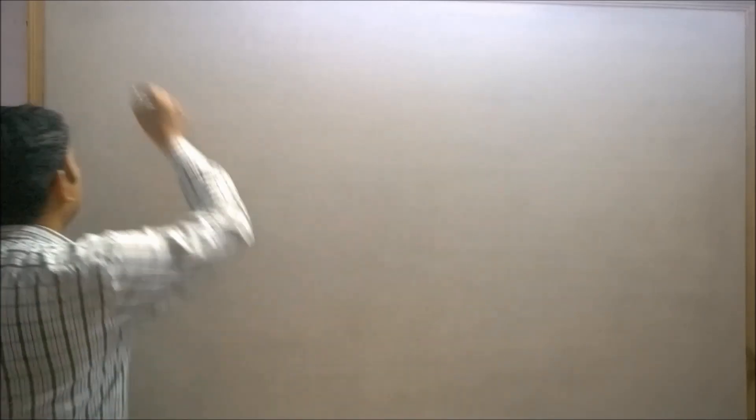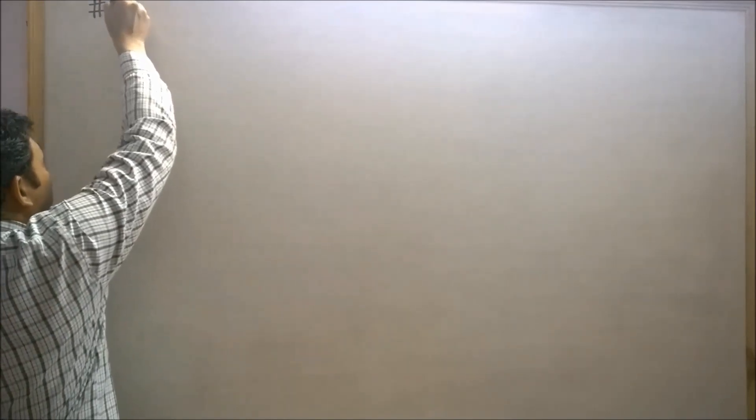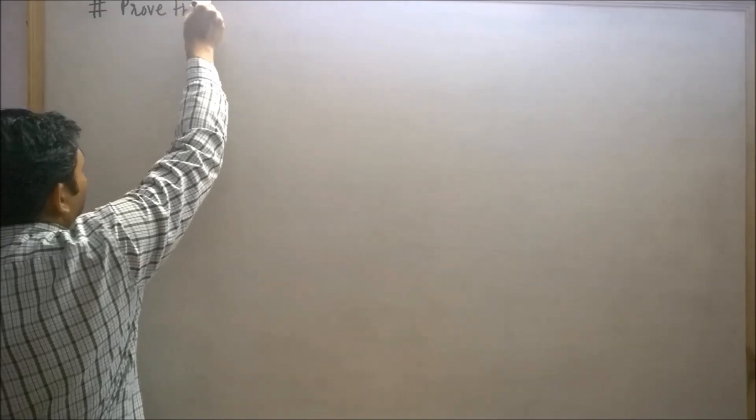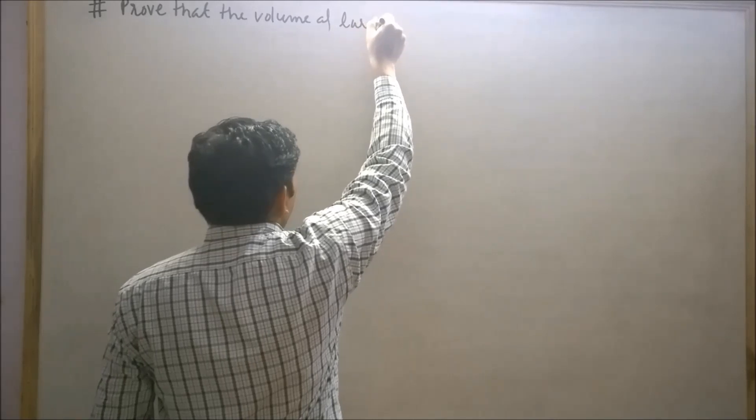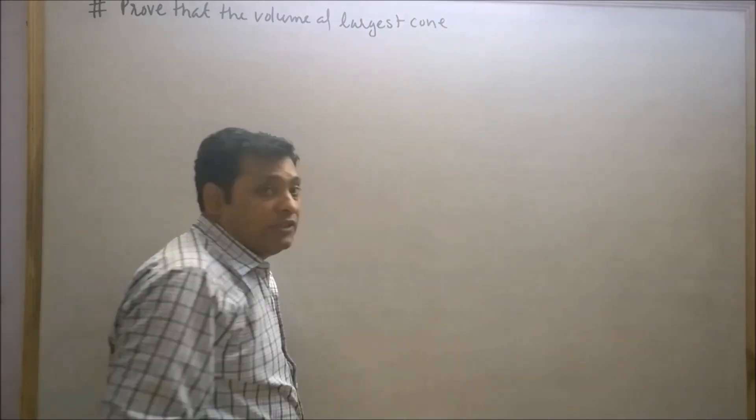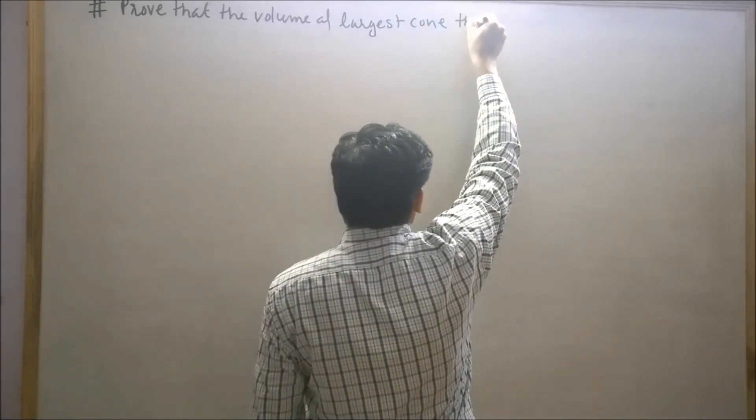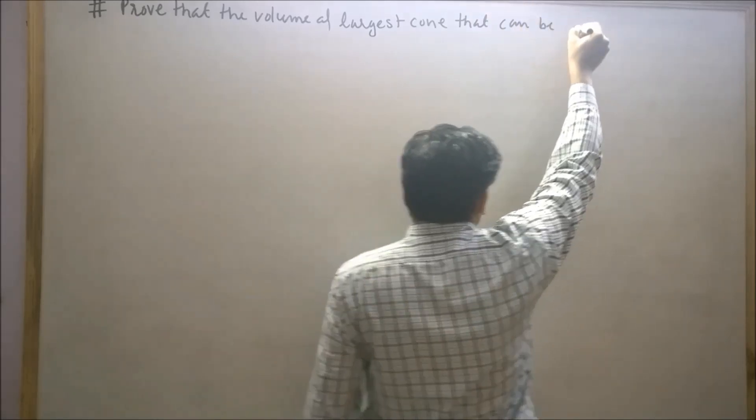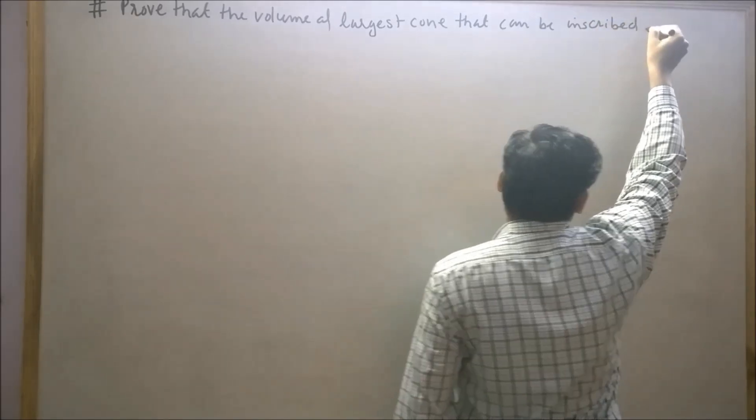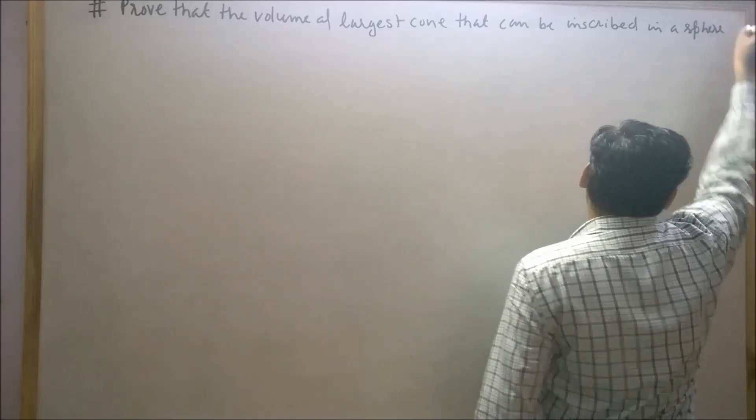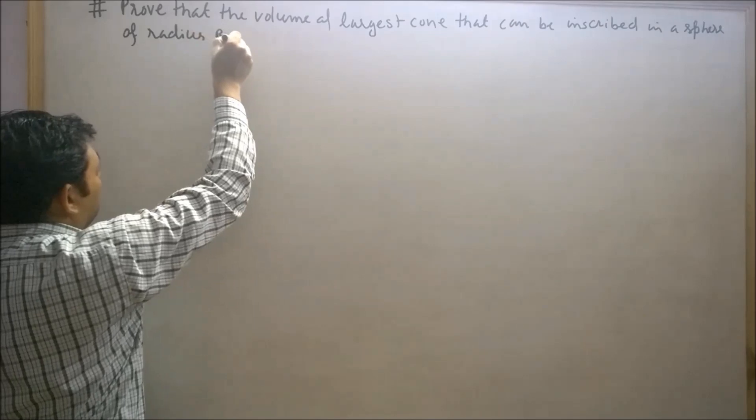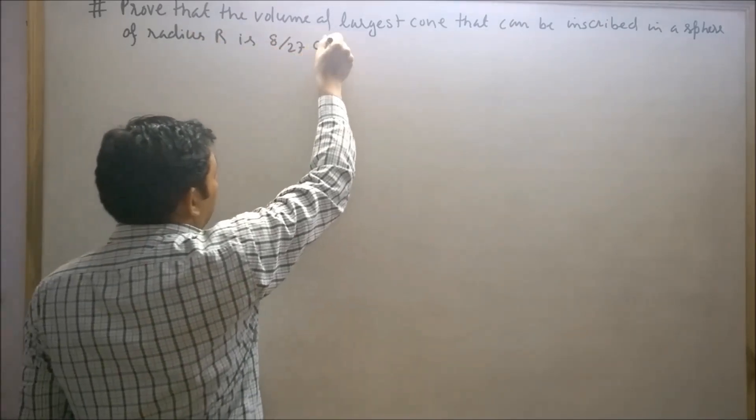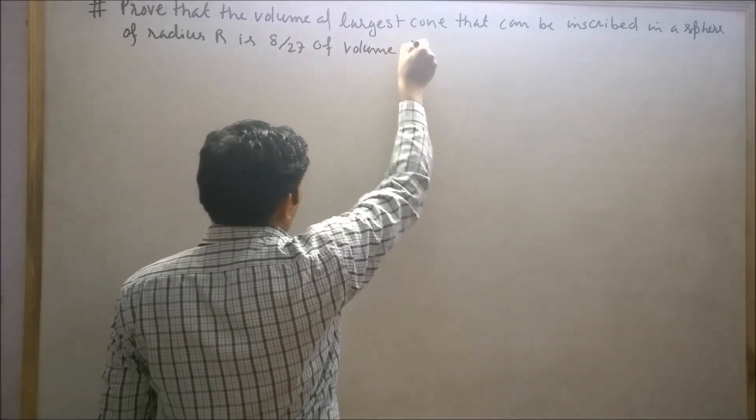Student, in today's lecture I am going to solve a good question related to maxima and minima. The question says: prove that the volume of the largest cone that can be inscribed in a sphere of radius R is 8/27 of the volume of the sphere.